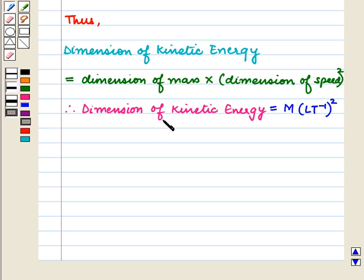Therefore, dimension of kinetic energy equals M × (LT⁻¹)², which equals M × L²T⁻², which equals ML²T⁻².